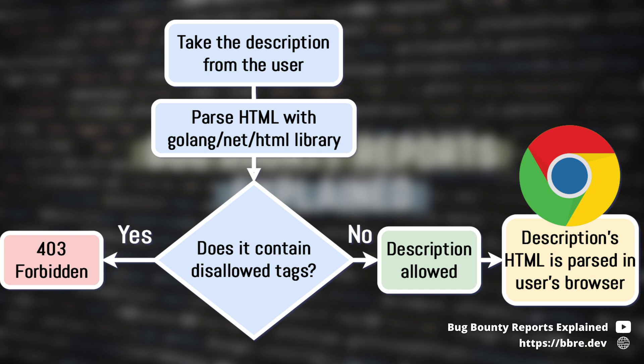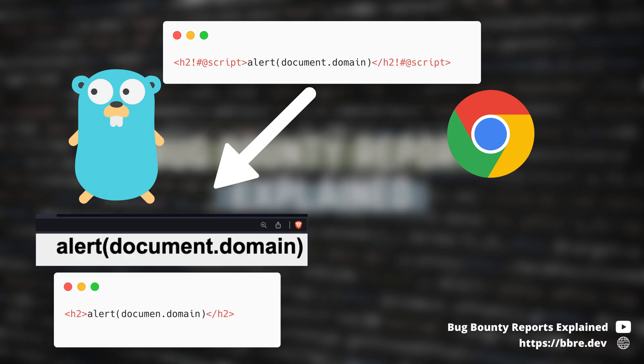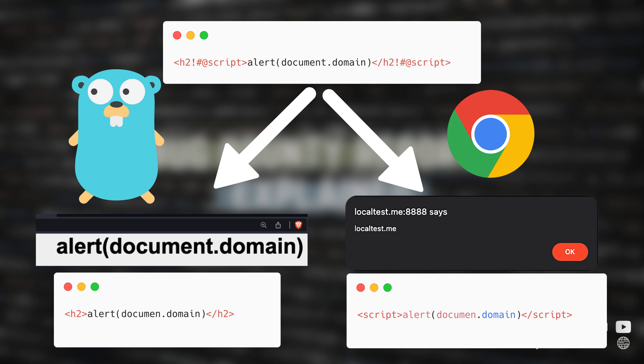If the tags are not allowed, I forbid the user from saving the description. If they are, I consider the description safe and show it to other users, where the HTML is parsed in their browsers. So the HTML is parsed twice — once by my code using Golang's HTML parser, and then by the browser of my potential victim. If I can find any inconsistency between these parsers, I can hide XSS payloads so the validator doesn't see them, but they execute in the victim's browser. When looking for bugs in libraries like this, you have to come up with these attack scenarios yourself. Just make sure you are using the library correctly, because if you misuse it, you will not be rewarded.